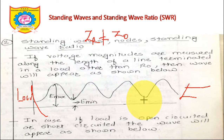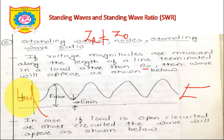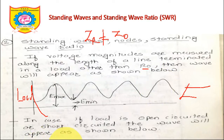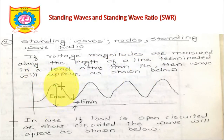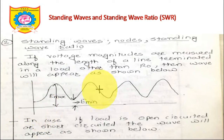If voltage magnitudes are measured along the length of a line terminated in a load other than Z0 — meaning the load impedance ZR is not equal to the characteristic impedance Z0 — the wave will appear as shown in the figure. It will have an Emax amplitude and an Emin amplitude. If it is not matched with Z0 but is short-circuited or open-circuited, the voltage pattern will appear accordingly.